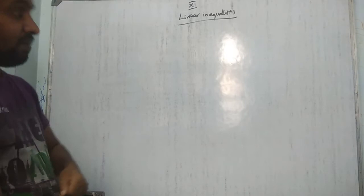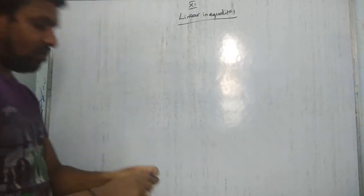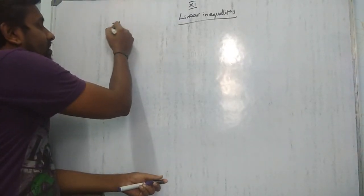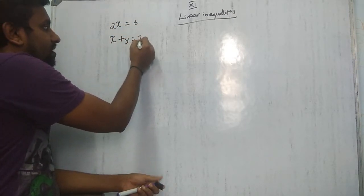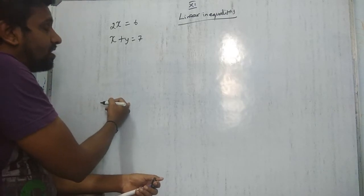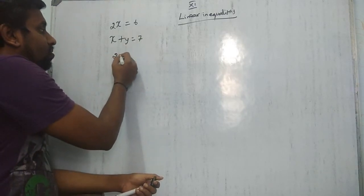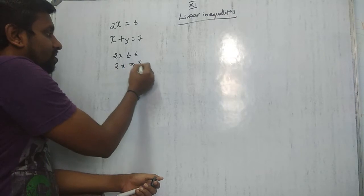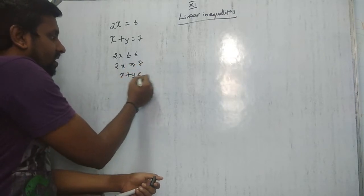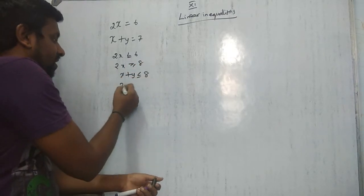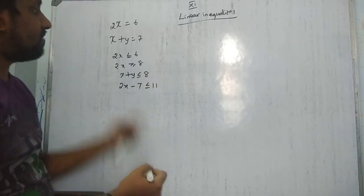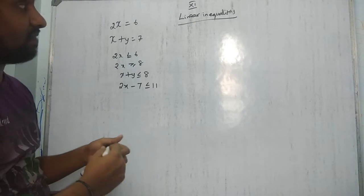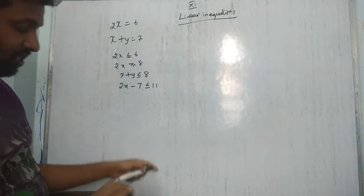Let me start with linear equations in one variable, then two variables, then linear inequalities. A linear equation in one variable is like 2x = 6 — find the x value. Two variables: x + y = 7 — find x and y using coordinates. Linear inequalities use symbols like 2x ≤ 6, 2x ≥ 8, x + y ≤ 9, or 2x - 7 ≤ 11.